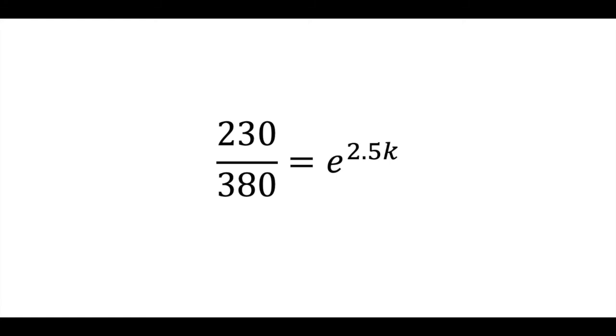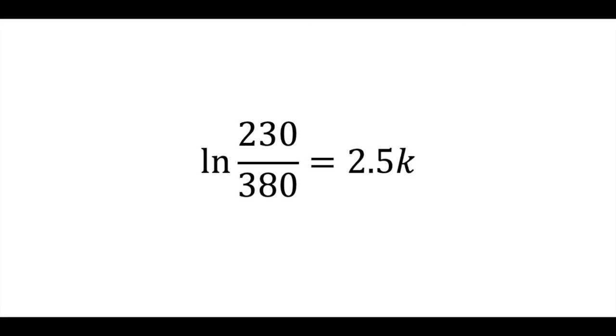To find the exponent in this case, we use a logarithm. The logarithm with base E is the natural logarithm, or ln. Log base E, or ln, of 230 over 380 is equal to 2.5K.